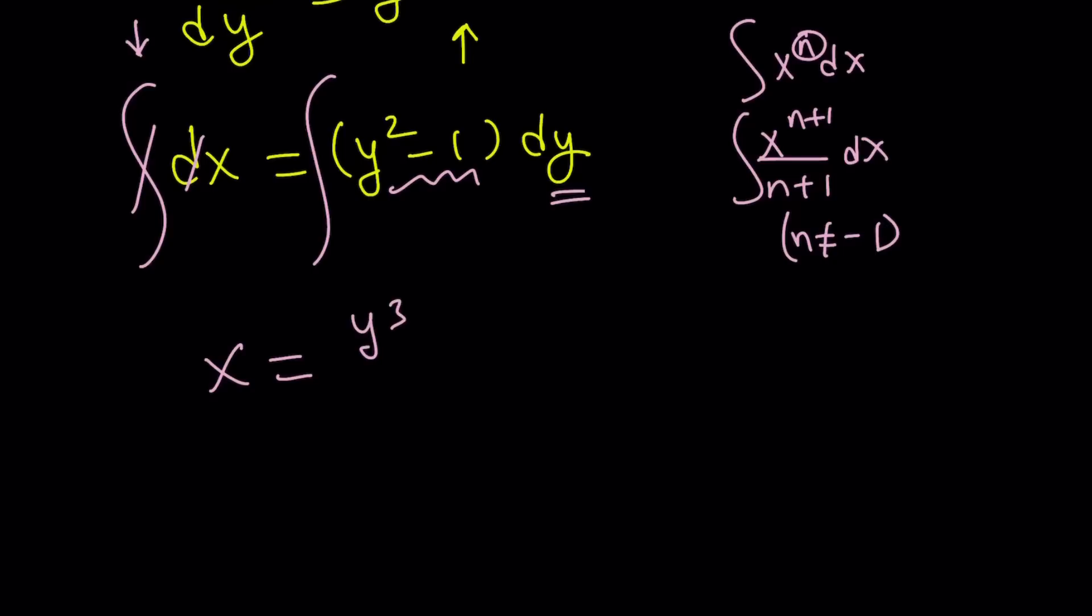Let's proceed with this then. Y squared is going to be y cubed over 3. And 1 is just, think about it. The derivative of what equals 1 if our variable is y. That's going to be y because the derivative of y with respect to y is 1. And then don't forget to add the constants.